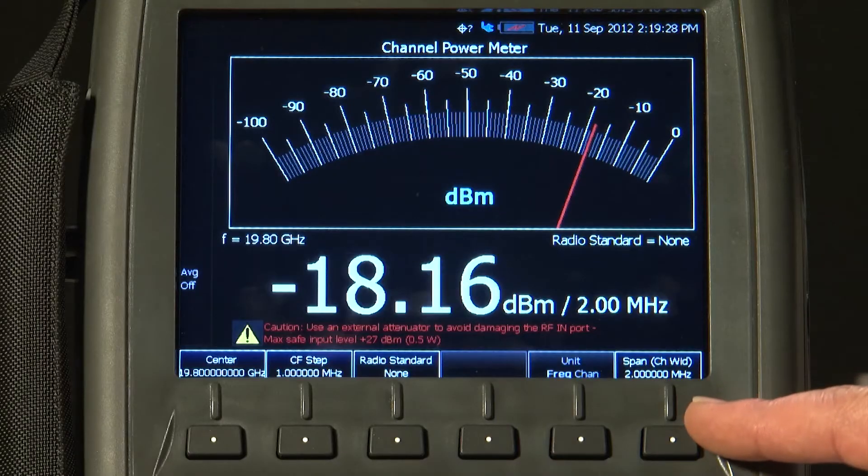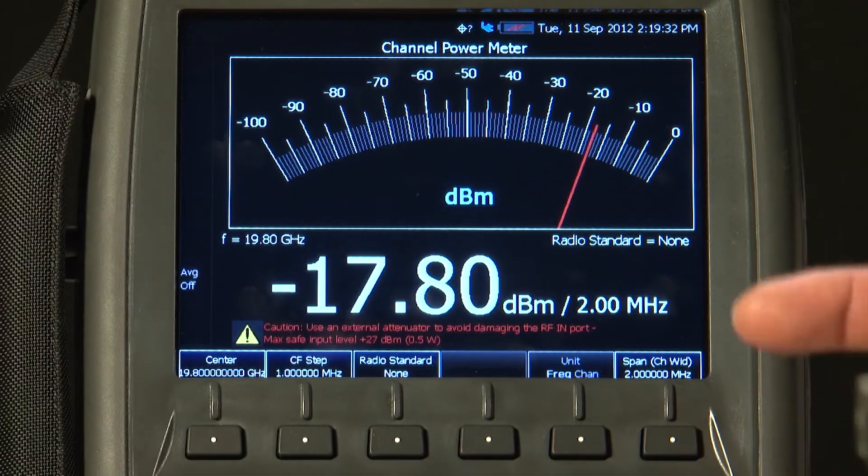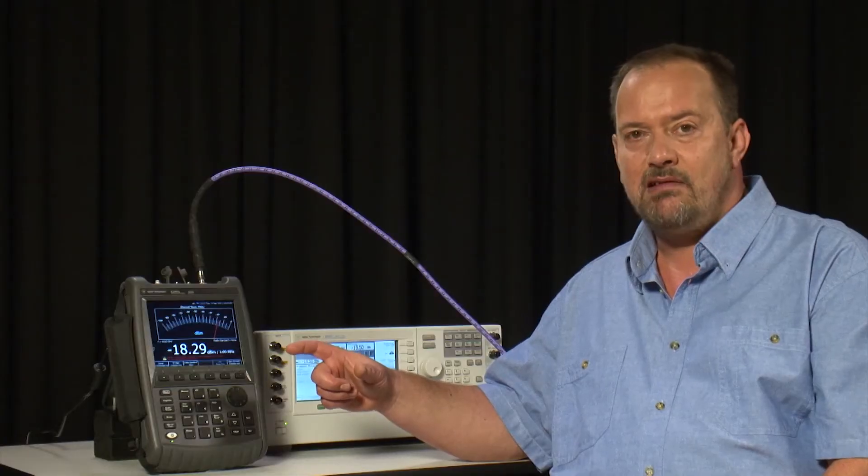And on the right here, we have set the span or channel width to 2 MHz. So that is the bandwidth within which we are measuring the RF power.